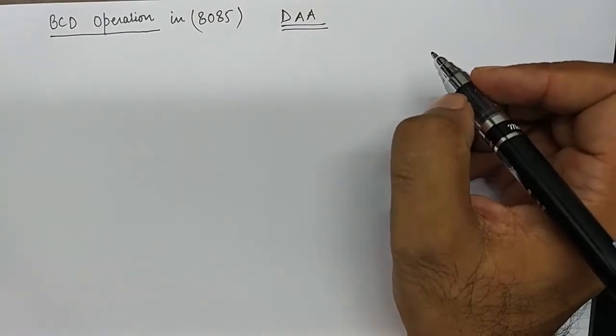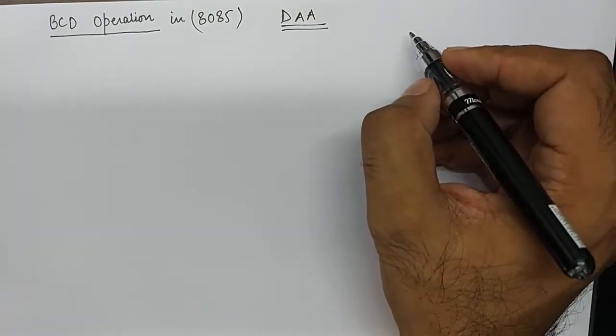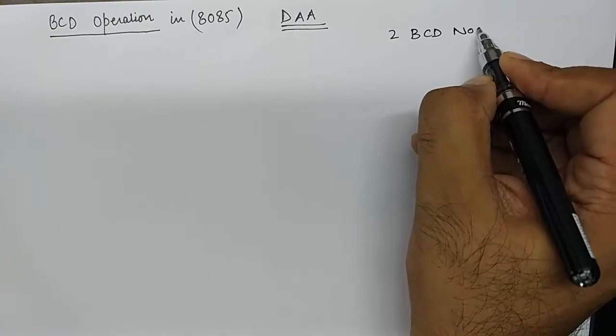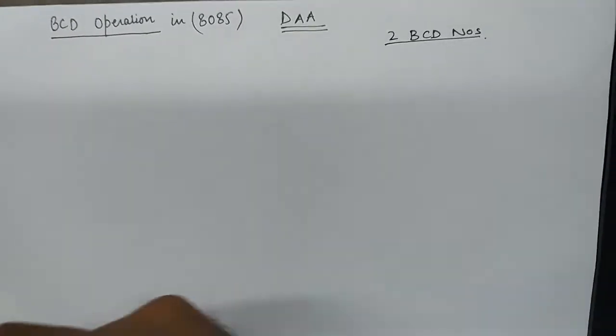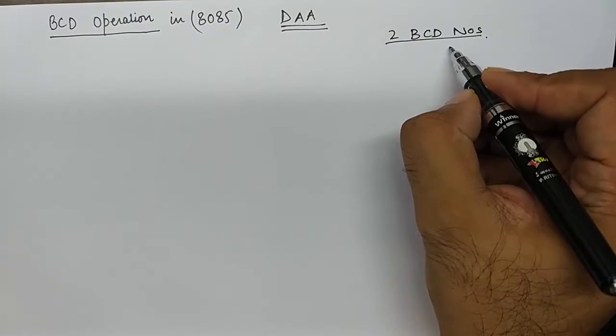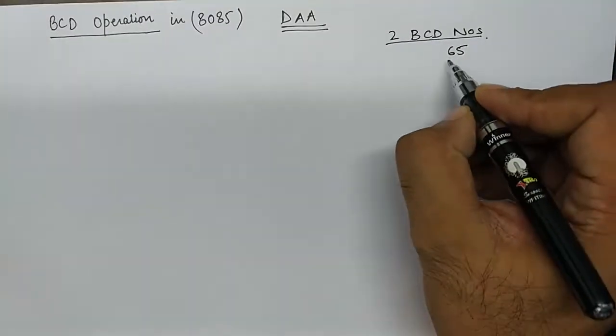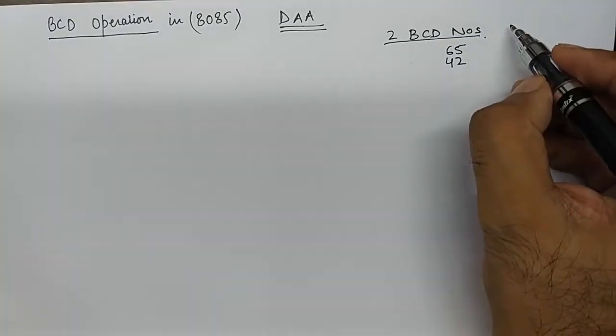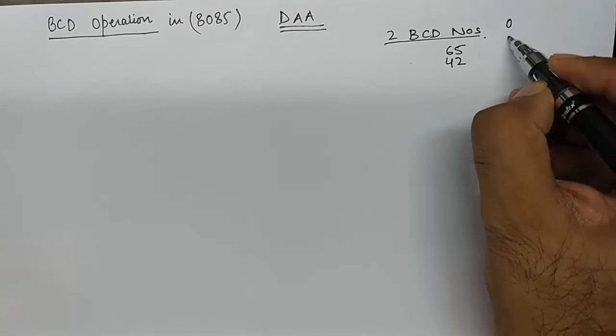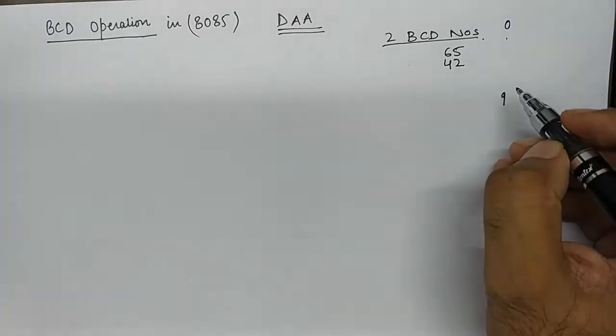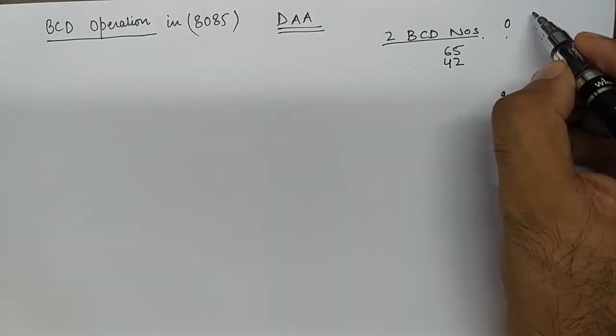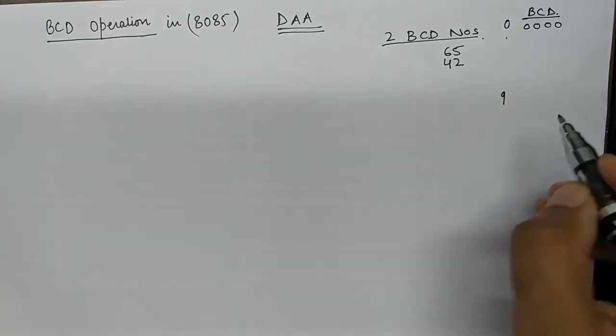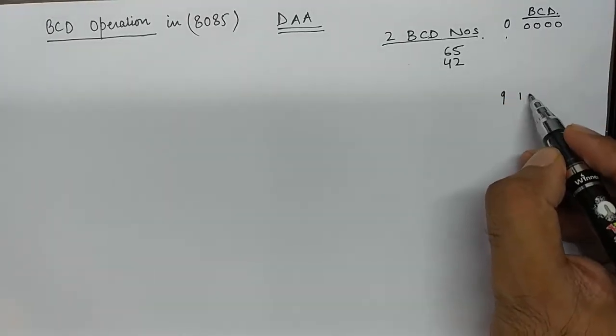When we talk about BCD operation in 8085, we have a scenario like this. We have two BCD numbers, for example two valid BCD numbers, let's say 65 and 42. By the way, all the BCD numbers from 0 to 9 are represented using a code which is known as binary code, and it is 0000 to 1001.